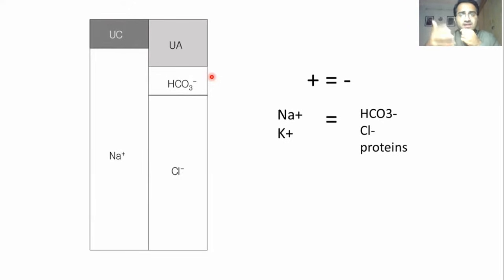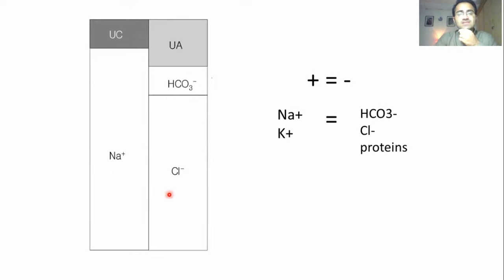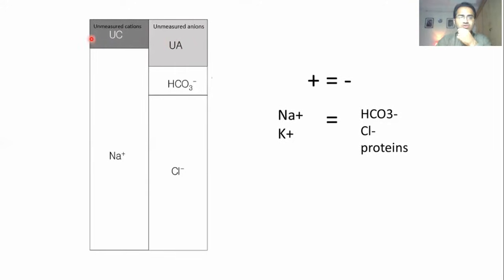On the negative side, chloride is the dominant ion — we calculate the concentration of chloride. Second to chloride is bicarbonate. All other positively charged ions go into the category of unmeasured cations, and all other negatively charged ions go into unmeasured anions. Anion is a negatively charged ion; cation is a positively charged ion.